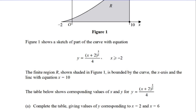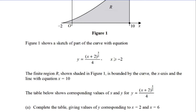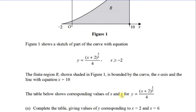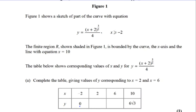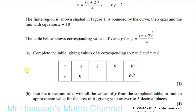The table below shows corresponding values of x and y for y = (x + 2)^(3/2) / 4. Complete the table giving values of y corresponding to x = 2 and x = 6. Looking at the example given, x = 10 has a value in surd form, so we should give our answers in the same form.